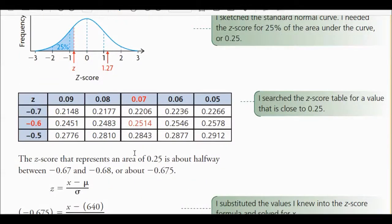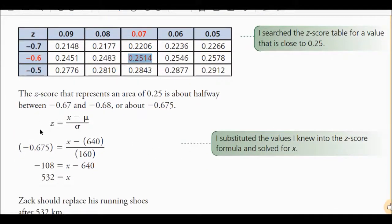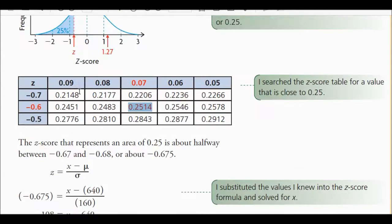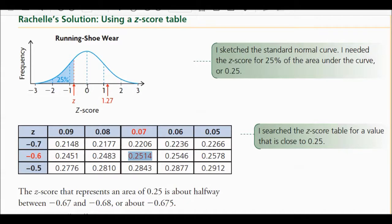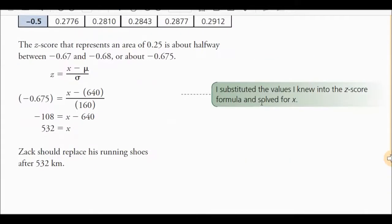Let's do Example 3 from your text. Athletes should replace their running shoes before their shoes lose the ability to absorb shock. Running shoes lose their shock absorption after a mean distance of 640 kilometers. So that number, 640, would be right about there on our standard normal distribution. It has a standard deviation of 160 kilometers. So Zach is an elite runner and wants to replace his shoes at a distance when only 25% of people would replace their shoes. At what distance should he replace his shoes? So in this type of question we're dealing with a bell curve, and we're basically looking for 25% right here.